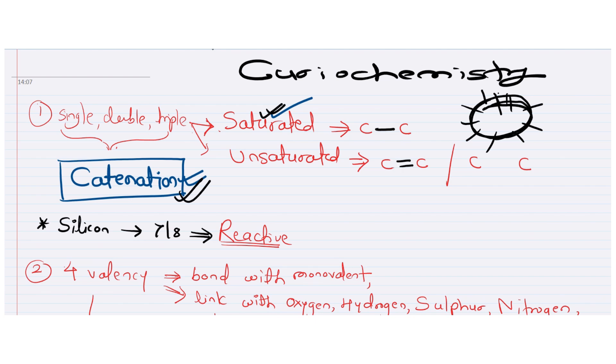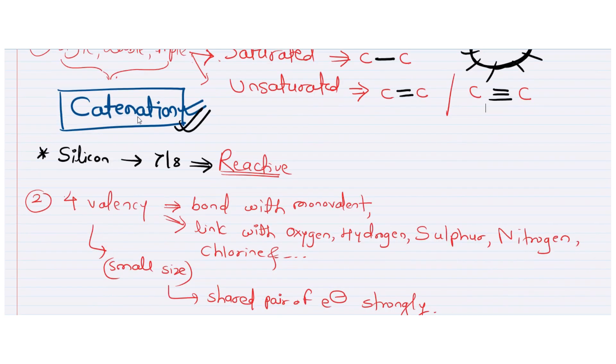But when double bond and triple bonds are there, so that time they are unsaturated carbon compounds. When you can see double bond or triple bond, then you have to say these are the unsaturated carbon compounds. So such type of property only carbon can show. We have the exception you can see on the screen already. That is silicon.